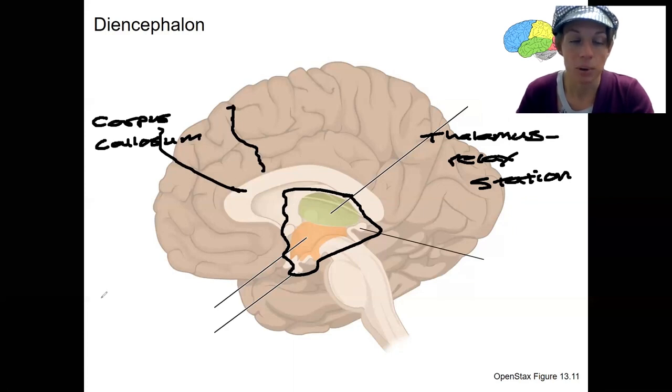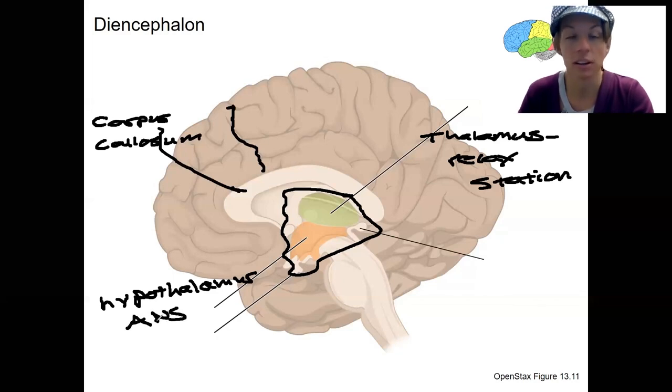And then we've got our hypothalamus just below the thalamus. And this is where there's going to be a lot of autonomic control. We'll see this again with the ANS, body temperature, a lot of basic important functions like that.